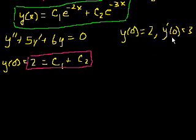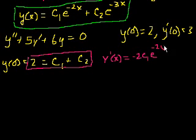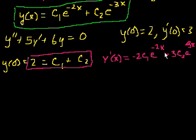Now let's apply our second initial condition, which tells us the slope at x equals 0. We take the derivative of the general solution: y prime of x equals minus 2c1 times e to the minus 2x, plus minus 3c2 times e to the minus 3x. Now we can use our initial condition — y prime at 0. When x equals 0, the right-hand side equals minus 2 times c1.